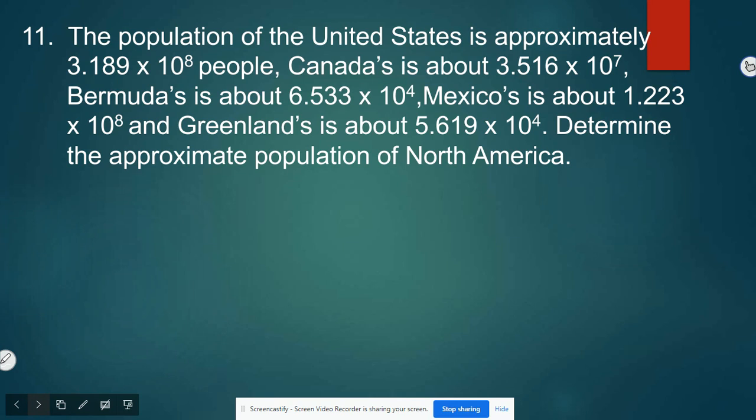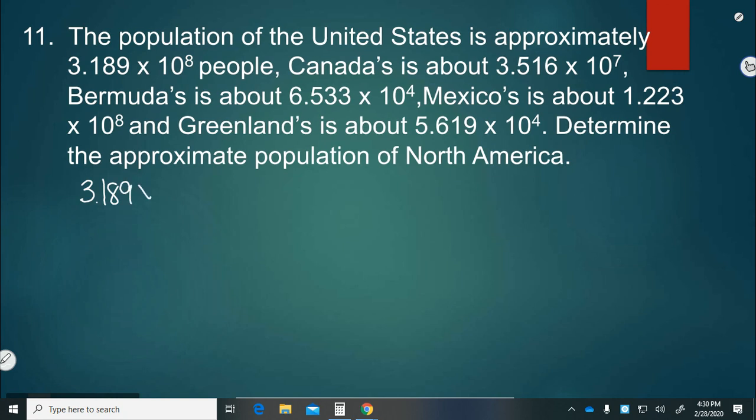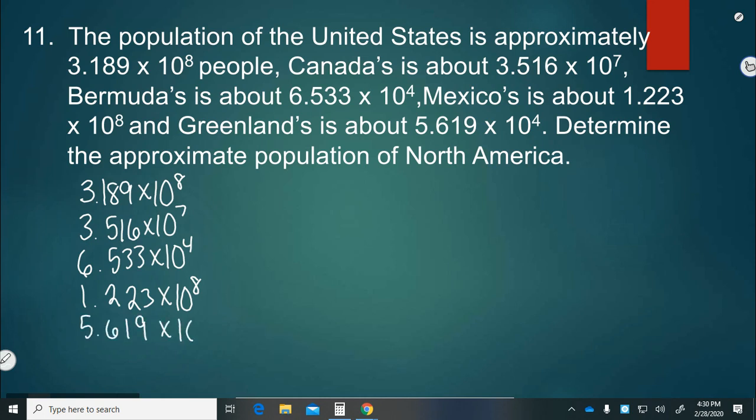So all of those countries combined create North America. So we're going to add all of their populations. So we have 3.189 times 10 to the 8th, 3.516 times 10 to the 7th, 6.533 times 10 to the 4th, and 1.223 times 10 to the 8th. And 1 more. 5.619 times 10 to the 4th.